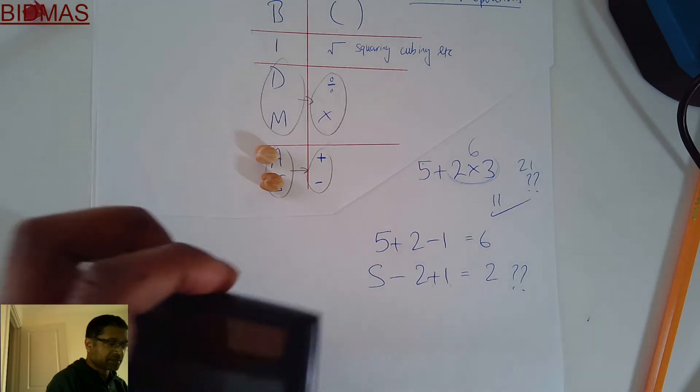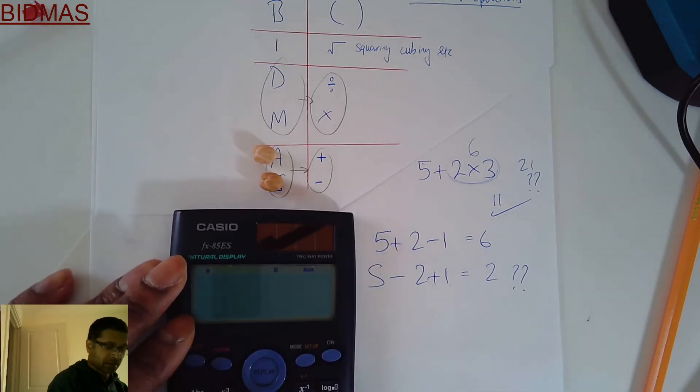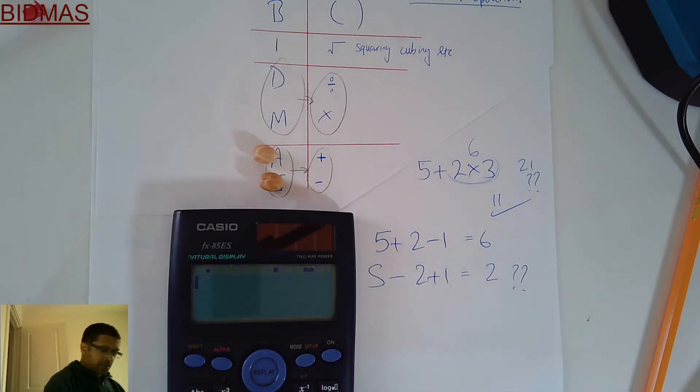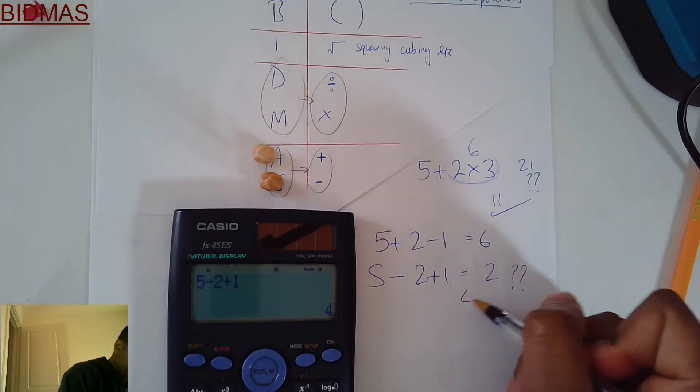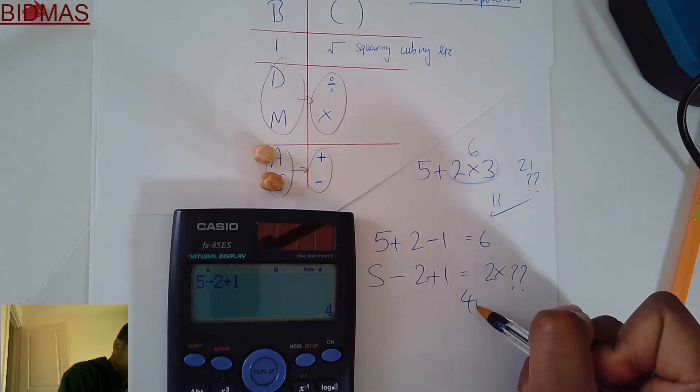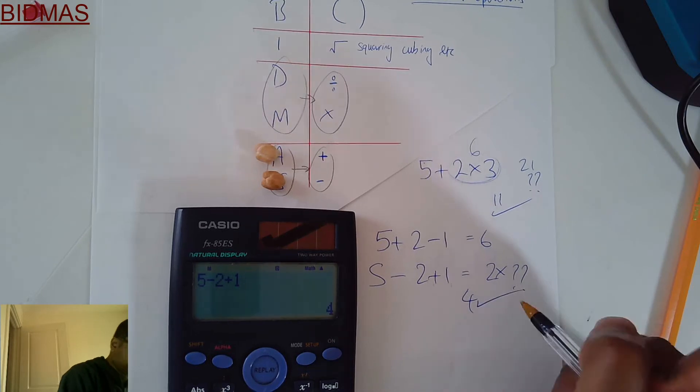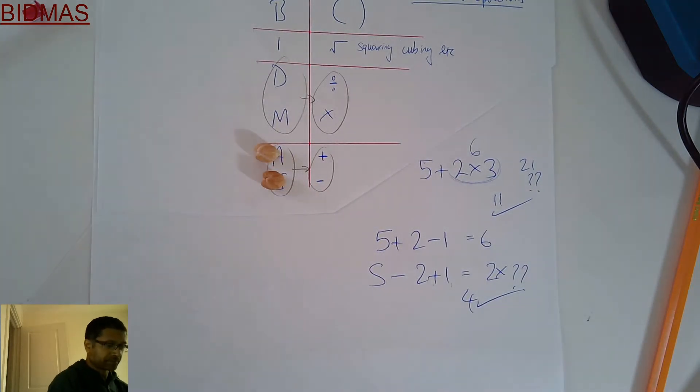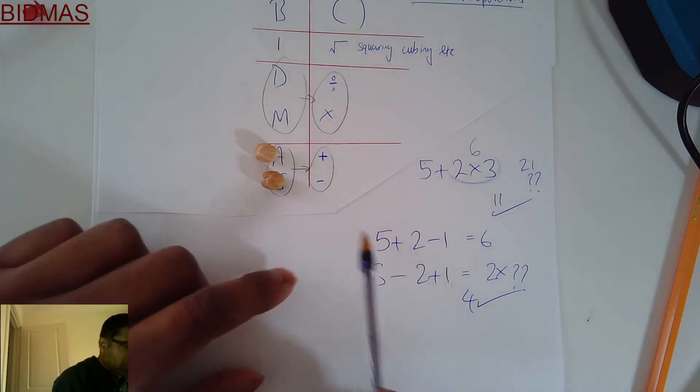Let's try this on the calculator. 5-2+1 gives me 4 for some reason. So clearly this one's wrong. This one is wrong. They're saying the calculator is showing that this is correct.